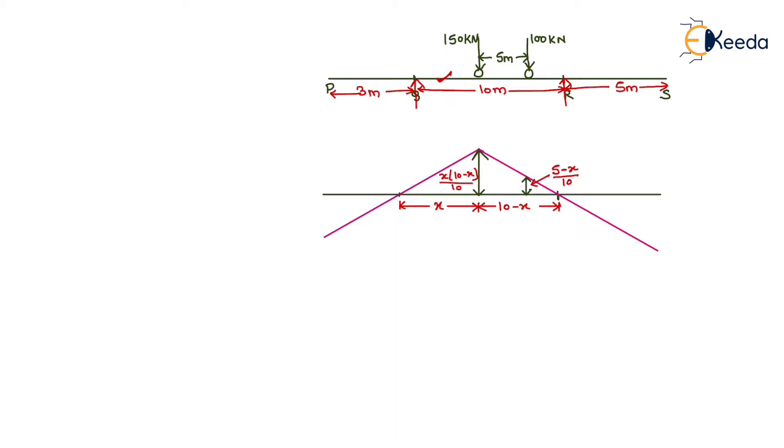We take a section X to determine the maximum sagging moment. When we draw the ILD for bending moment, this ordinate is of length AB/L, where A is X, B is 10 minus X, and L is 10. Its value equals X(10-X)/10.